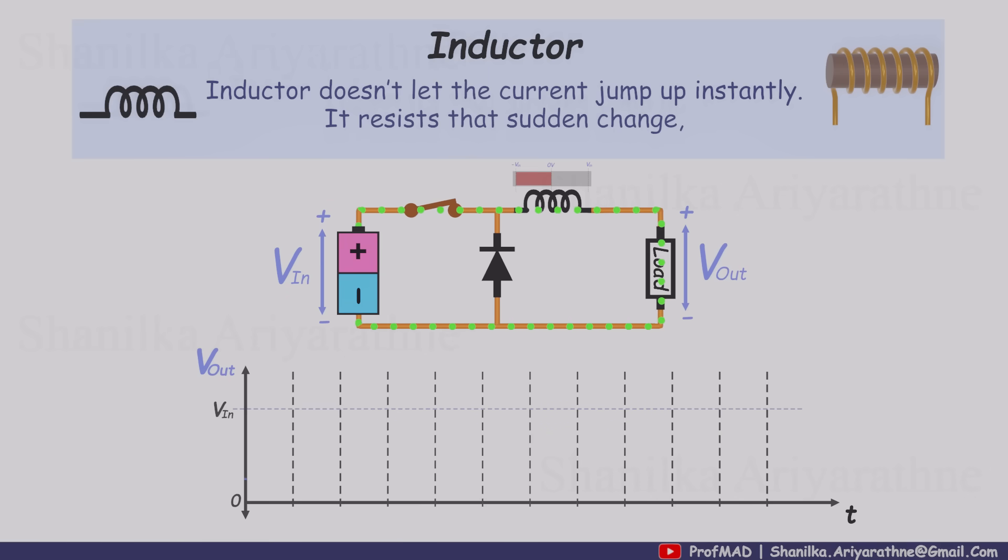If we keep switching like this, the voltage across the load becomes smoother. Instead of a sharp square wave, it starts to look more like a triangular shape. The inductor definitely helps, but on its own, it's still not enough. There's still noticeable ripple left.